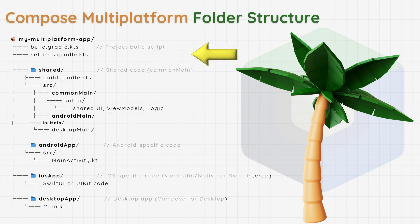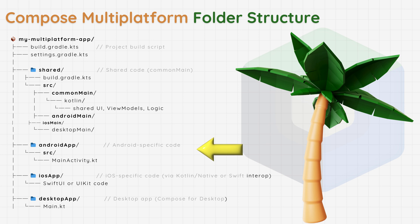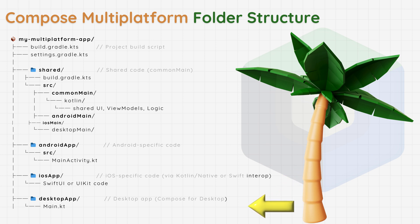Let's look at the project structure. At the top, we have the usual Gradle files. Then comes the shared folder — this is where most of the code lives: UI, logic, and view models. Each platform has its own folder: Android app for Android, iOS app for iOS, and desktop app for the desktop version. All connected, all running from the same Kotlin code base.